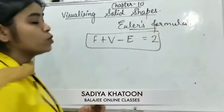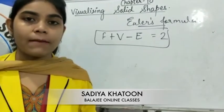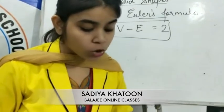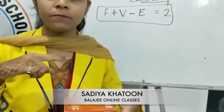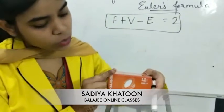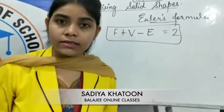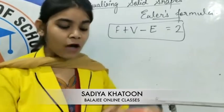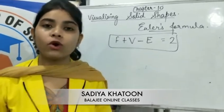The next thing is about the view — how a shape looks from different angles. For example, if you see this box from the top, you will get a square-type shape. If you see it from the side, you will get a rectangular shape. So from different angles, we get different views — top view, front view, and side view.